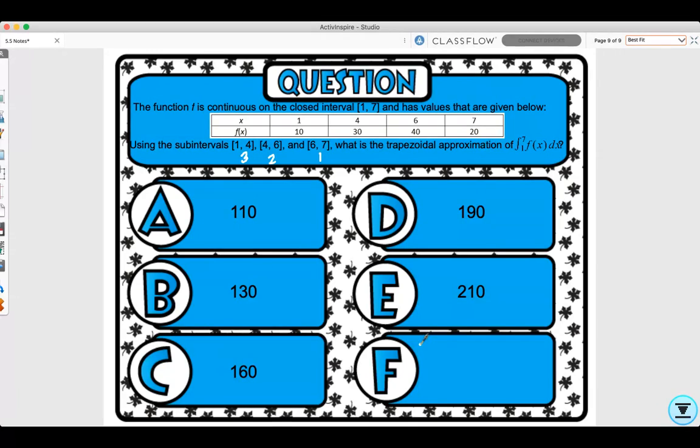So the area for this one would be 3, because that's how long my interval is, times (30 + 10)/2, plus 2, because my next interval has length 2, times (40 + 30)/2, plus 1, because that's the length of my last interval, times (20 + 40)/2. And I would get 160. So the correct answer was C.